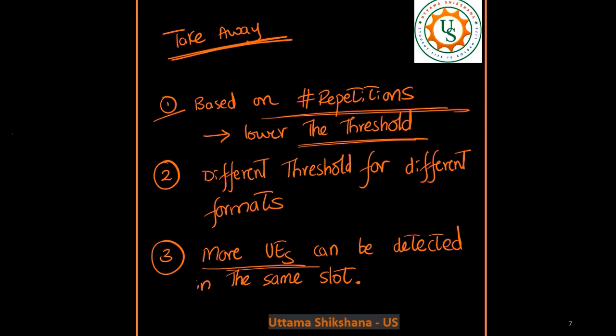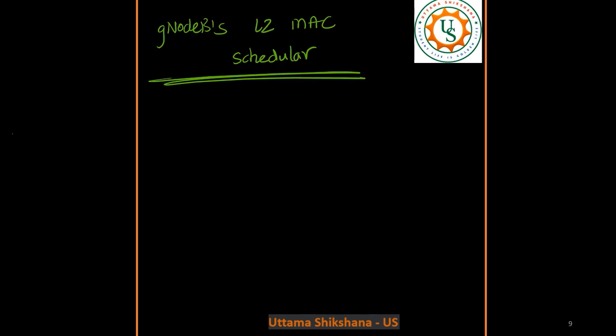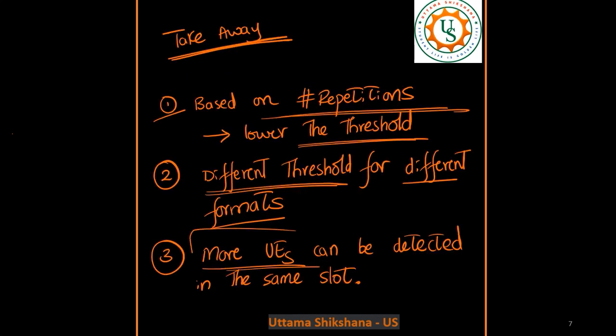One more thing: depending on the different formats, the design of this threshold will vary because different formats have different repetitions. For example, if you look at format A1, it has two repetitions, and A2 has four repetitions. With more repetitions, we can try to set the threshold as low as possible. So more UEs can be detected in a slot and reported to L2.